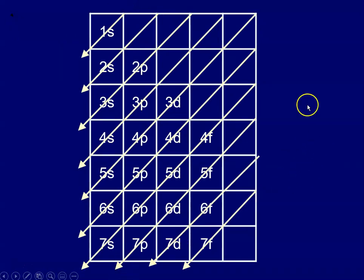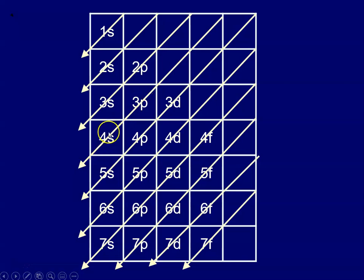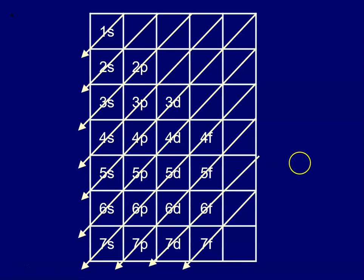Some books show the diagram with 1 at the top and 7 at the bottom, but however you look at it, the order is always the same: 1s, 2s, 2p, 3s, 3p, 4s. Notice that the 4s fills before the 3d, meaning the 4s is lower in energy than the 3d. This is the order that helps you map out diagrams showing electrons for different atoms.